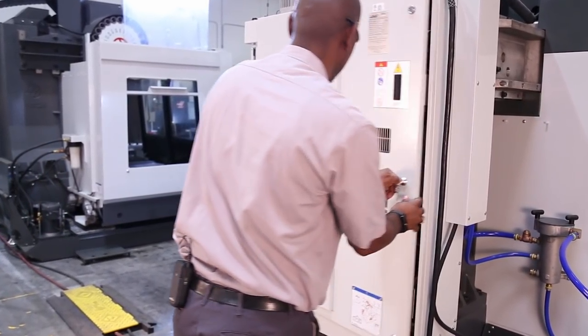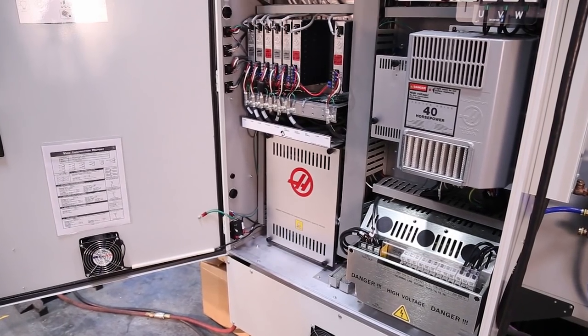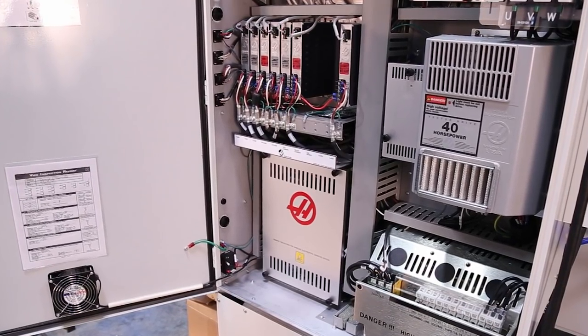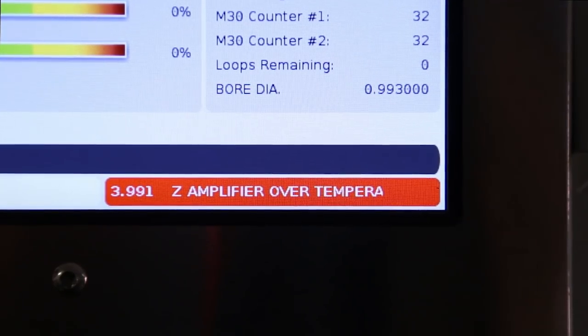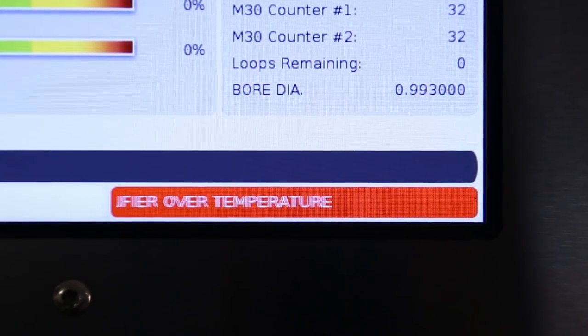Each axis in the machine has a servo amplifier that powers the servo motors. If the servo motors draw an unusually high amount of current from the amplifiers, the amplifiers can heat up and trigger an amplifier over temperature alarm.